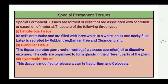Second, glandular tissue: this tissue secretes gum, resin, mucilage, oil, or digestive enzymes. The cells are organized to form glands in different parts of the plant through which these substances are secreted. Third, hydathode tissue: this tissue is modified to release water in some plants like Nasturtium and Colocasia. They release excess water from the plants, similar to transpiration.